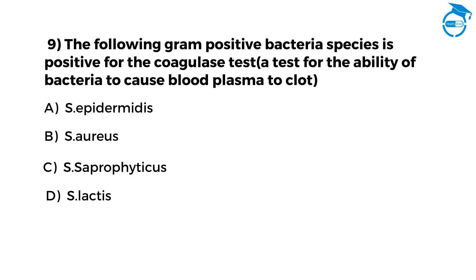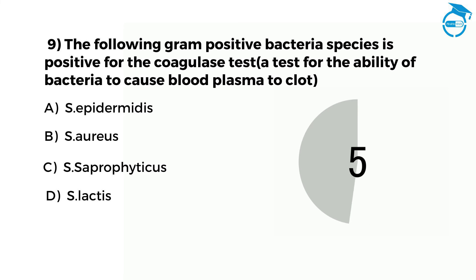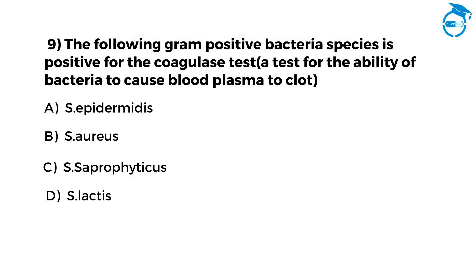The following gram-positive bacteria species is positive for the coagulase test — option A S. epidermidis, option B S. aureus, option C S. saprophyticus, option D S. lactis. Your time starts now. Post your answer in comments. The right option is B, that is S. aureus.